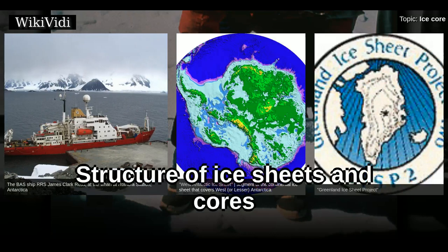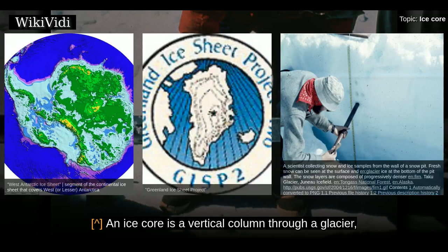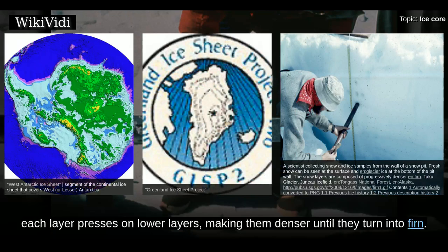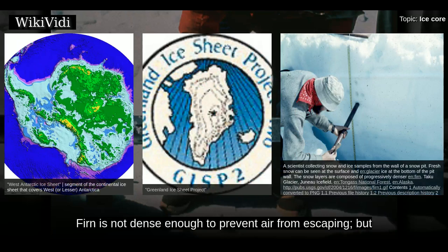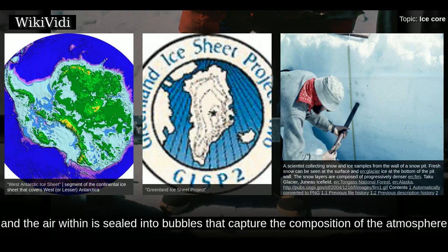An ice core is a vertical column through a glacier, sampling the layers that form through an annual cycle of snowfall and melt. As snow accumulates, each layer presses on lower layers, making them denser until they turn into firn. Firn is not dense enough to prevent air from escaping, but at a density of about 830 kg per cubic meter, it turns to ice, and the air within is sealed into bubbles that capture the composition of the atmosphere.